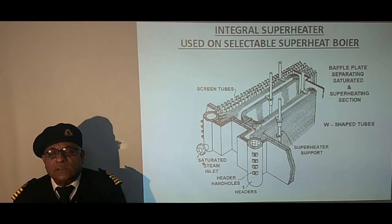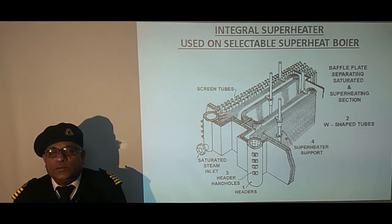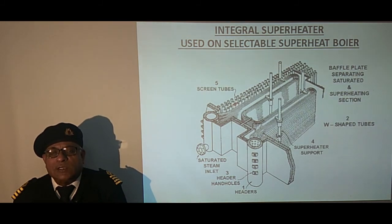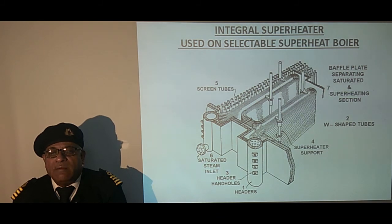Let us see the various components of this superheater. First we have the headers, then the W-shaped tubes attached to the headers. Third are the handholes for getting access to the tube internals. Then we have superheater support tubes taking the weight of the tubes. Then we have three rows of large diameter screen tubes so that the intensity of the furnace cannot reach the superheater. Then we have the saturated steam inlet on one side and the outlet on the other side. We have a division plate dividing the gas flow in two parts — partly over the superheater and partly over the saturated section.